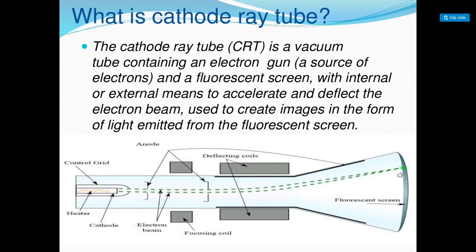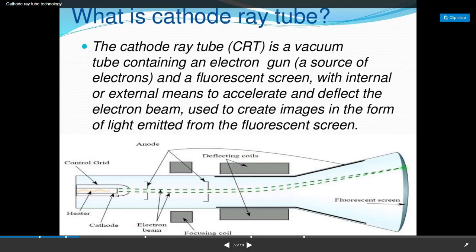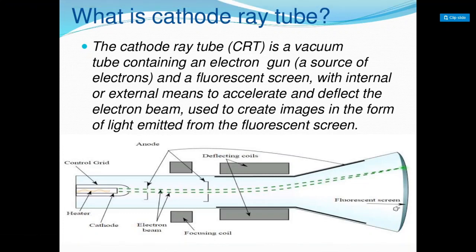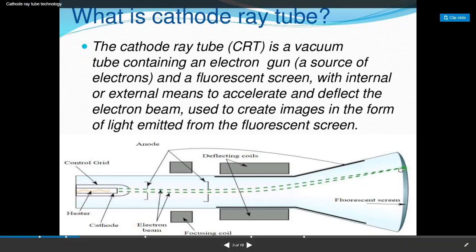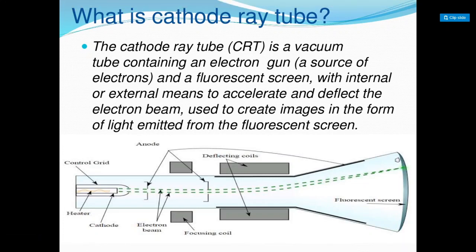The cathode emits electrons as an electron beam. These pass through the anodes and the focusing coil, then through the deflecting coils, and fall on the fluorescent screen. The fluorescent screen is a screen of phosphorus — when an electron falls on a point on the screen, that point emits light. You can see that light from the other end, which is the monitor side, and hence you can see the image.